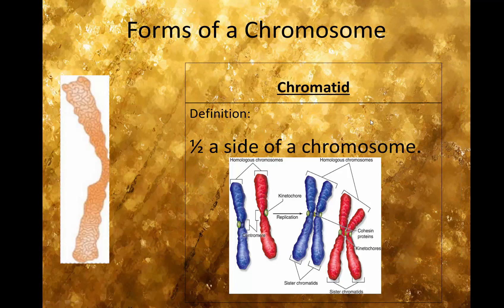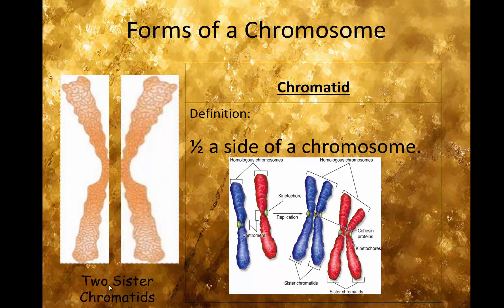The other form is called a chromatid. A chromatid is half of a chromosome. We get two chromatids — called the sister chromatids — held together by the centromere. The centromere will split when we go through mitosis. These homologous pairs will split, and we can get them overlapping, which is actually how we get mutations. We'll talk more about that in Unit 7, which is genetics.